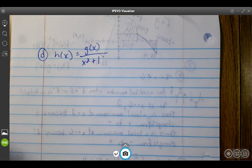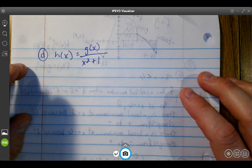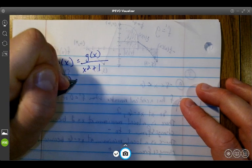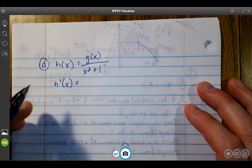This is the solution video for FRQ number 7 part D. Part D says let H be the function defined by H(x) = g(x) / (x² + 1). Find H'(1). If I'm going to find H'(1), I first have to find H'(x). So I have g(x) over x² + 1.